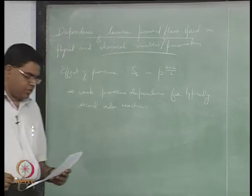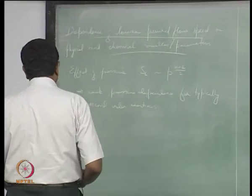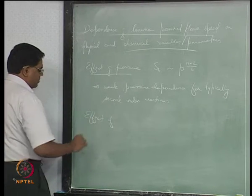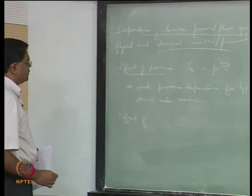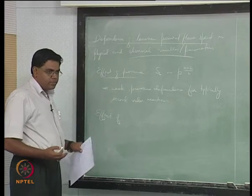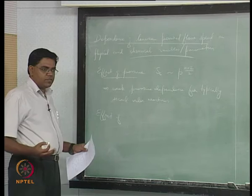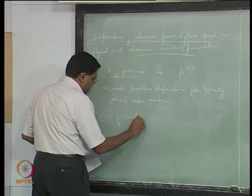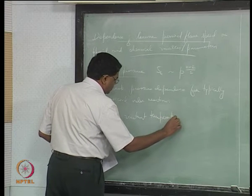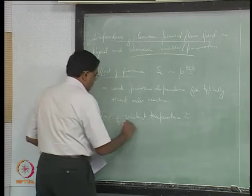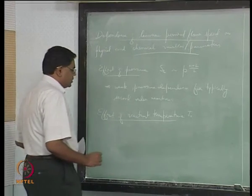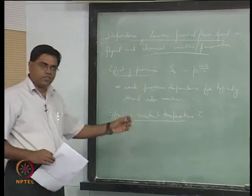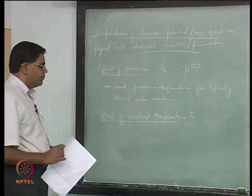There are lots of other parameters and variables to think about. When we talk about pressure, the next thing we naturally think about is the effect of initial temperature — or rather, in a steady-state situation, the temperature of the unburnt reactants, T0. This information is available in most textbooks; we'll go through it quickly to highlight the most important aspects and think about it in physical terms.